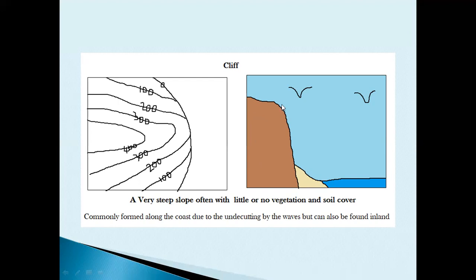This steep drop in the land — a cliff — is commonly found along coastal areas, but can also be found inland. For example, along a river's course there are points where the riverbed drops along a cliff, and when water moves over that land we call the feature a waterfall.